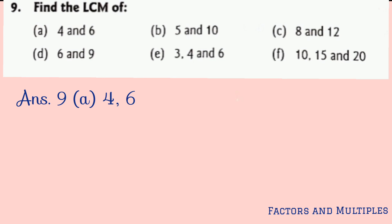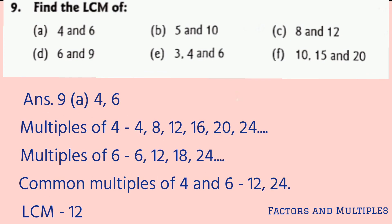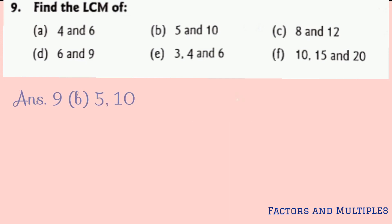Part a: 4 and 6. We write the multiples of 4 and 6, and we find 12 and 24 as the first 2 common multiples. Out of these, 12 is the smallest, so 12 is the least common multiple — the LCM of 4 and 6.